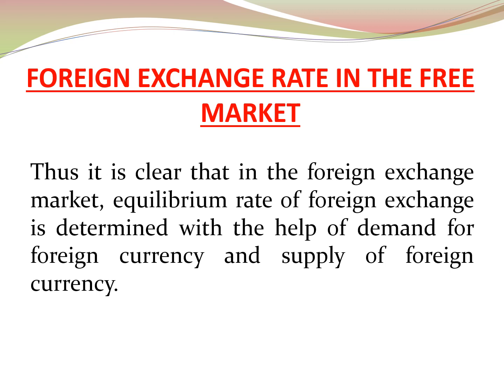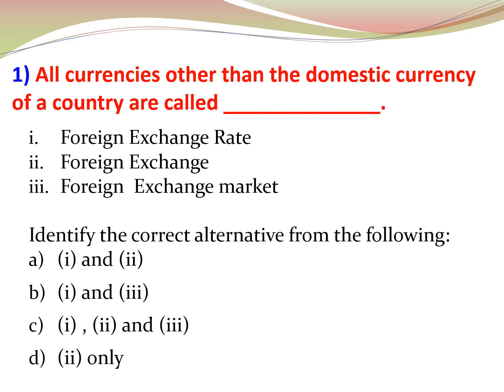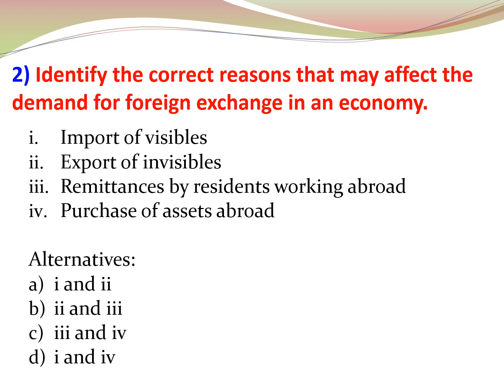Thus, it is clear that in the foreign exchange market, the equilibrium rate of foreign exchange is determined with the help of demand for foreign currency and supply of foreign currency. Now it is question time. The correct answer to the first question is option D: all currencies other than the domestic currency of a country are called foreign exchange. For the next question, imports of visibles and purchase of assets from abroad will increase the demand for foreign exchange in the economy.